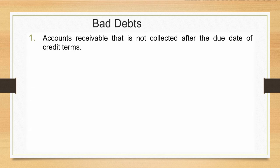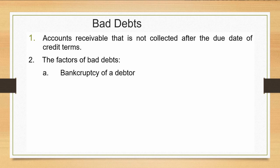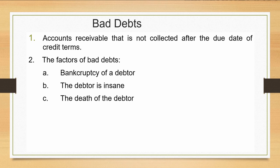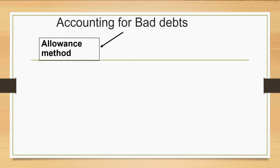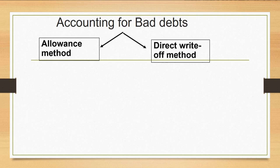What is meant by bad debts? Bad debts are accounts receivable that are not collected after the due date of credit terms. We have to record bad debt expenses as operating expenses. There are two methods to record accounting for bad debts: number one, the allowance method, and number two, the direct write-off method.